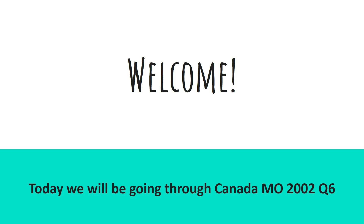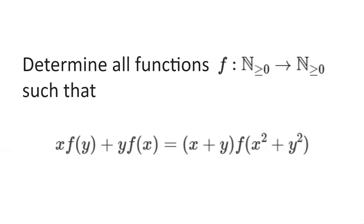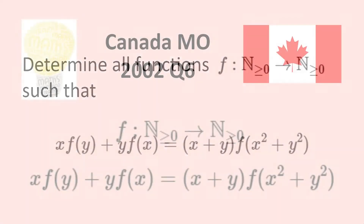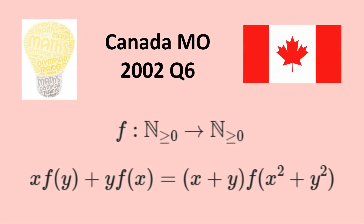Welcome. Today we'll be going through a functional equation from the Canadian Maths Olympiad 2002. Determine all functions from the non-negative integers to the non-negative integers such that x multiplied by f of y plus y multiplied by f of x is equal to x plus y multiplied by f of x squared plus y squared. Please pause the video here and have a think about the problem on your own before proceeding to the hints and solutions.